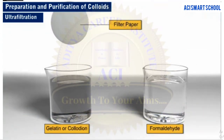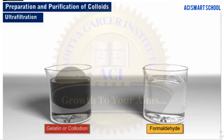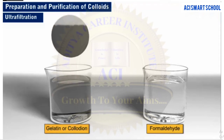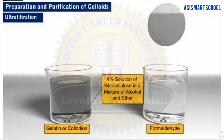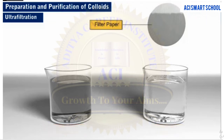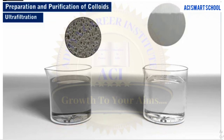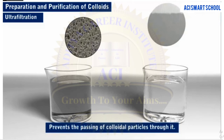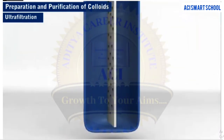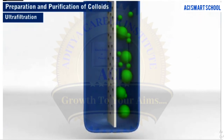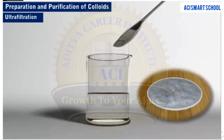The size of the pores in the filter paper can be decreased by soaking it in a solution of gelatin or collodion, followed by hardening with formaldehyde. Usually, a collodion solution is a 4% solution of nitrocellulose in a mixture of alcohol and ether. The filter paper thus formed is known as an ultrafilter and prevents the colloidal particles from passing through it. Ultrafiltration, however, is a slow process. It can be speeded up by applying suction or pressure. To get a pure colloidal solution, the colloidal particles left on the ultrafilter paper are stirred with the fresh dispersion medium.